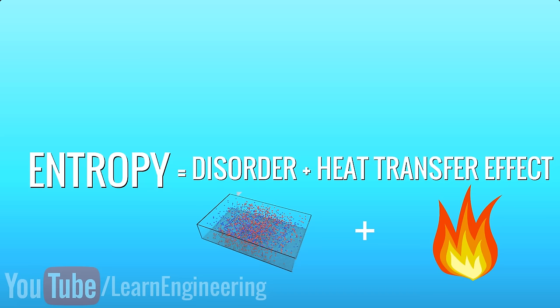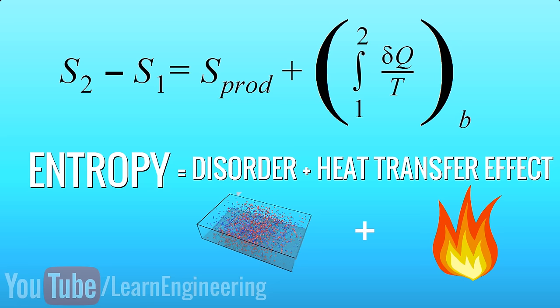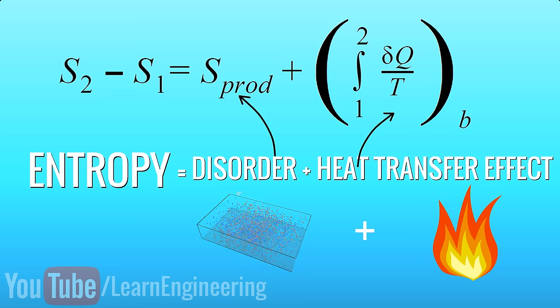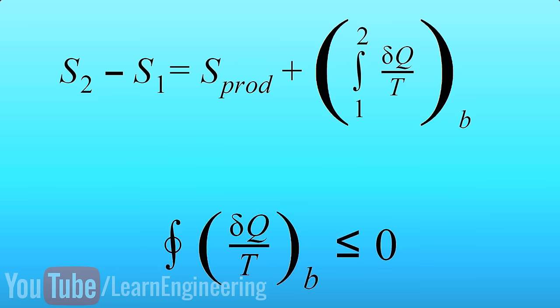In short, entropy change of a process can be defined as the sum of change in entropy production and entropy transfer. For a perfectly reversible process, where the process has no friction in mixing, the entropy production becomes zero. If you use this definition of entropy in the Clausius inequality,